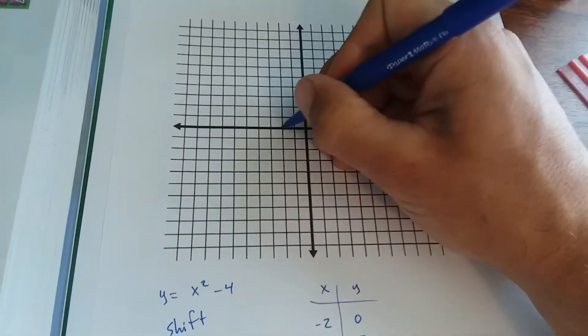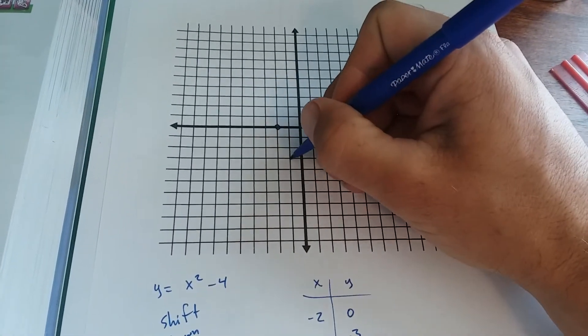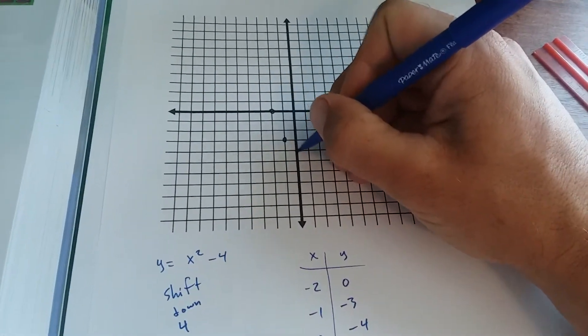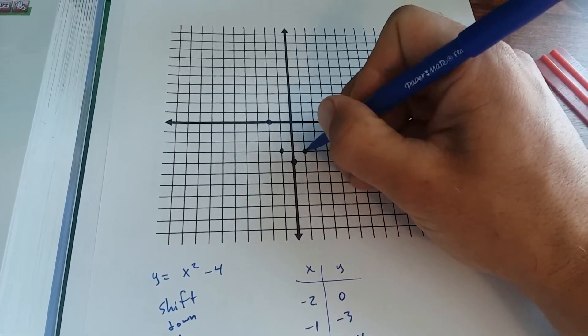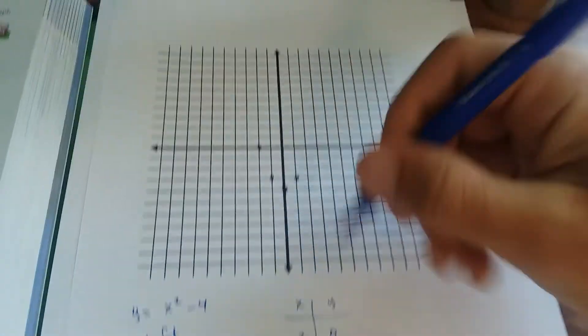Negative 2, 0. Negative 1, negative 3. 0, negative 4. 1, negative 3. And then 2, 0.